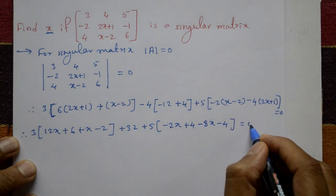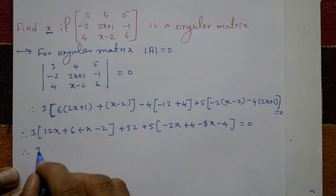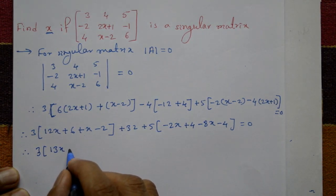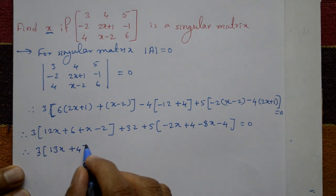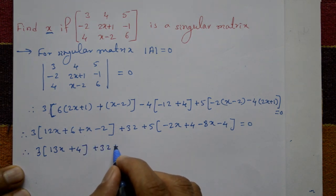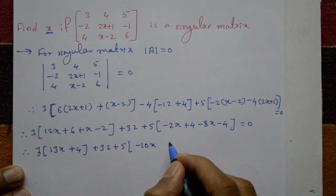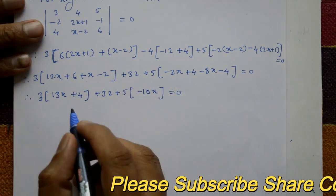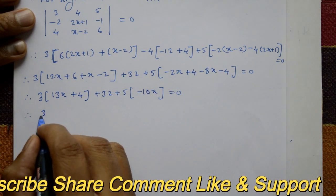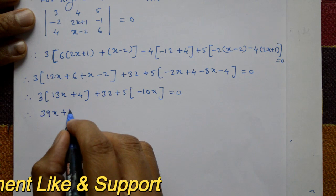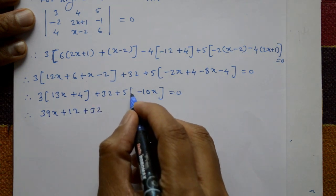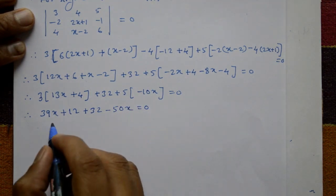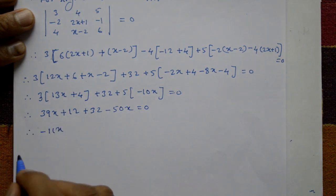Now multiply and open the brackets. Therefore 3 into 13x plus 4 gives 39x plus 12, plus 32 as it is, plus 5 into minus 10x plus 4, where minus 4 and plus 4 get cancelled, giving minus 50x. This equals 0, so 39x minus 15x is minus 11x, and 12 plus 32 is 44.